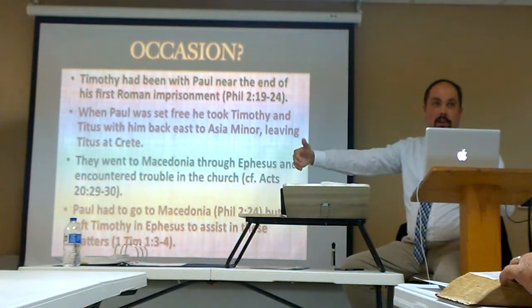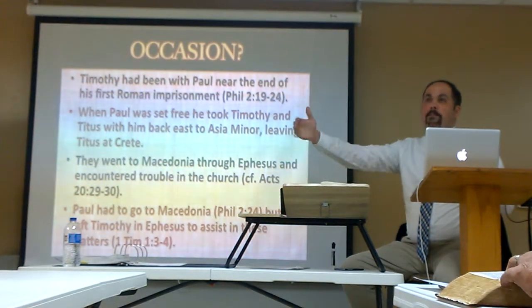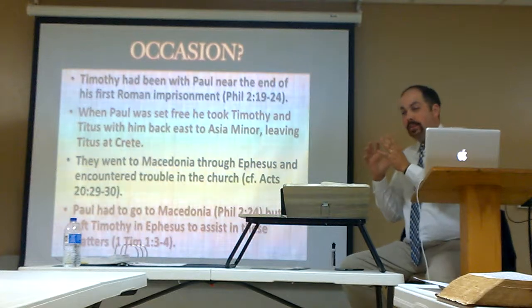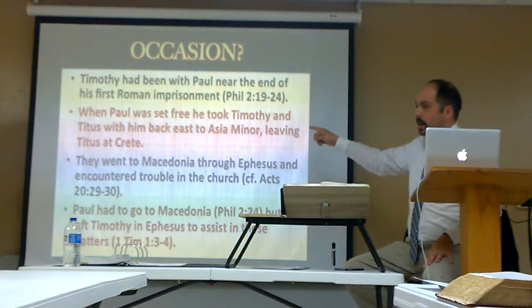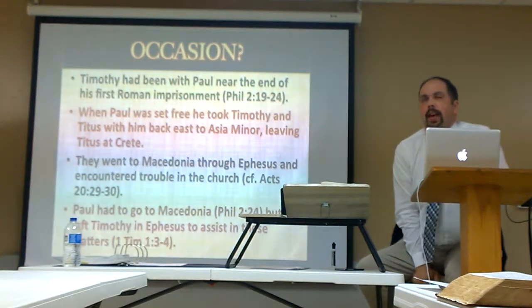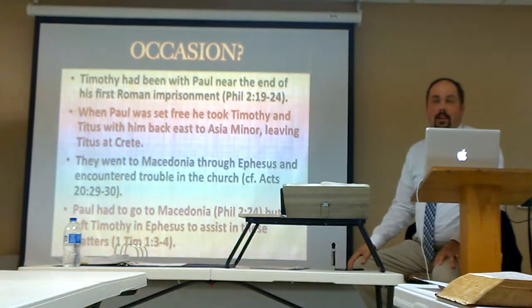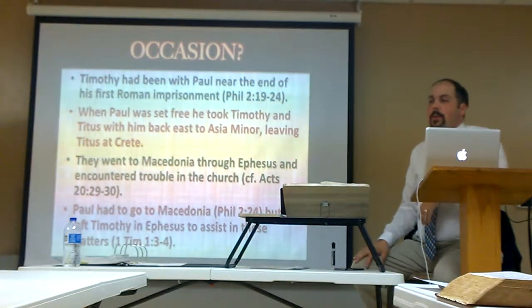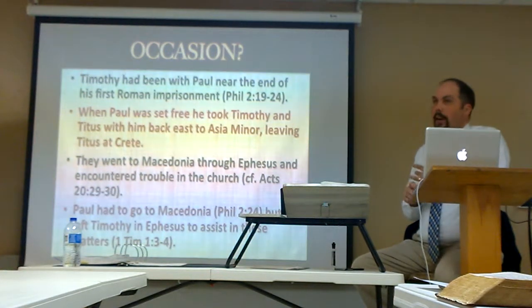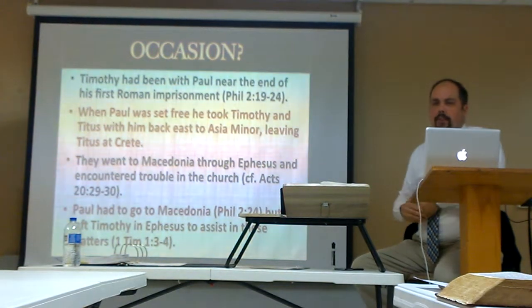He gets on a prison ship with 276 other prisoners, guarded by a centurion named Julius, after being shipwrecked and bitten by a snake. Talk about a bad day. So he does get to Rome, and that's how Acts ends. But once he gets out of prison, according to Philippians, he's not anticipating death — he's anticipating being released. And instead of going west to Spain, he's going to go back east and visit Christians in places he knew, especially Crete, where he leaves Titus.